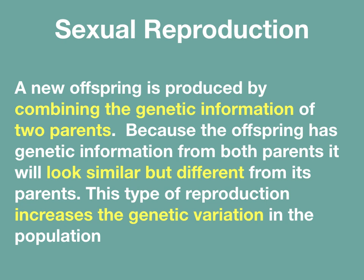In sexual reproduction, a new offspring is produced by combining the genetic information of two parents. Because the offspring has genetic information from both parents, it will look similar but different from its parents. This type of reproduction increases the genetic variation in the population.